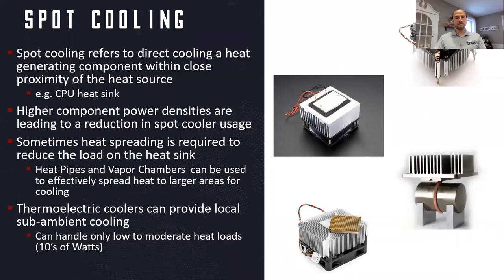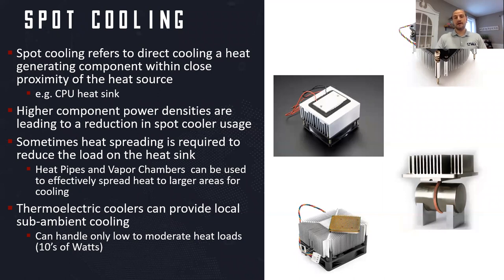First we'll talk about spot cooling, which refers to the direct cooling of a heat generating component within the immediate proximity. You're seeing on the right here a number of examples — mostly CPU coolers and some thermoelectric-based devices. Components that are coming out today tend to be high enough power where there's not enough space immediately available around the heat generating component to get enough heat sink volume to dissipate the energy at an appropriate temperature. Many of these applications shown are relatively low power where a heat sink fits within the footprint of the heat generating component itself.